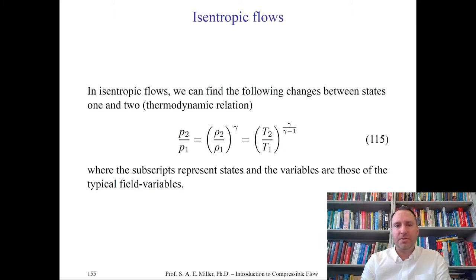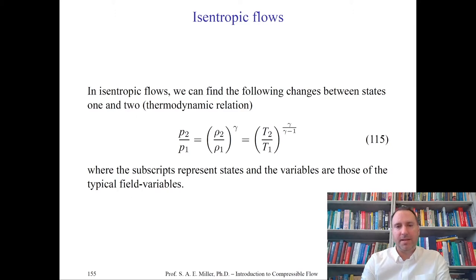These are useful properties and we'll derive more useful ones later. Equation 115 isn't particularly important on its own. The subscripts represent states and the variables are the typical ones — P is pressure, rho is density, T is temperature, and gamma is the ratio of specific heats, which for air is 1.4.